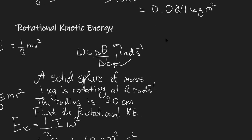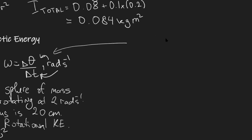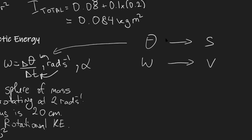Angular velocity ω is the rotational equivalent of speed. Angular displacement θ is the equivalent of linear displacement. Angular acceleration α = Δω / Δt is the equivalent of normal acceleration, and it is the rate of change of angular speed.